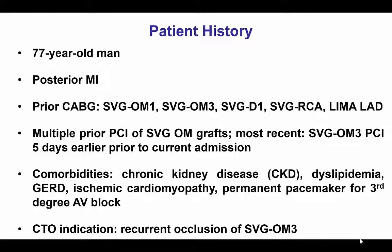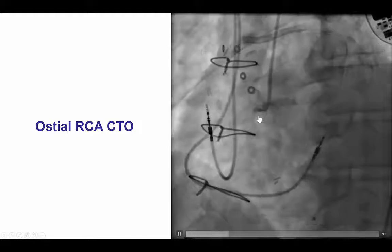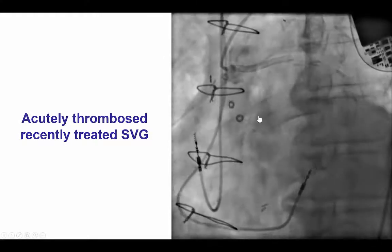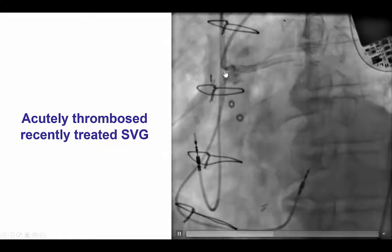The patient presented with a posterior myocardial infarction due to failure of a vein graft to the obtuse marginal branch. He had undergone multiple interventions in that vein graft, the last intervention being 5 days prior to the current presentation. He had multiple comorbidities including cardiomyopathy, pacemaker, and chronic kidney disease. He did have a CTO of the right coronary artery, and an acutely thrombosed vein graft that had recently been stented 5 days prior.